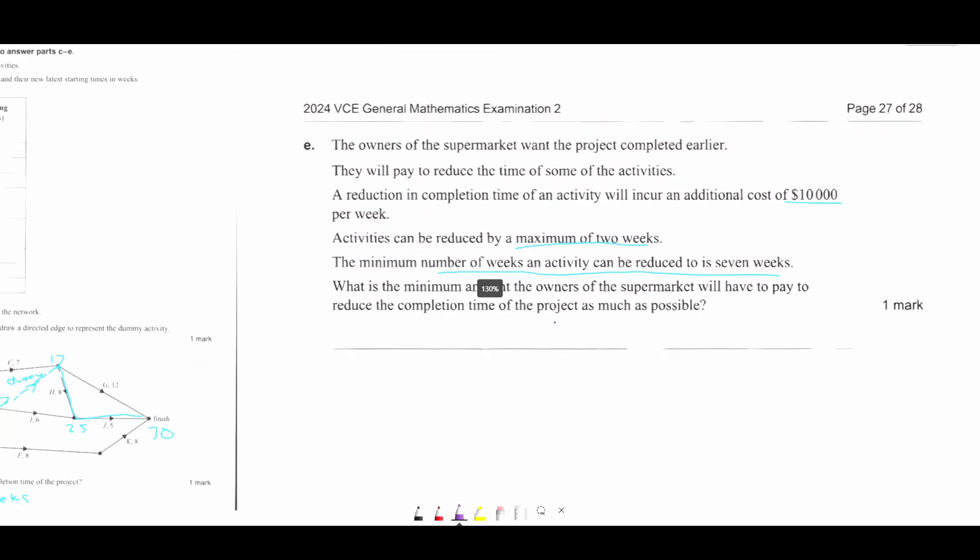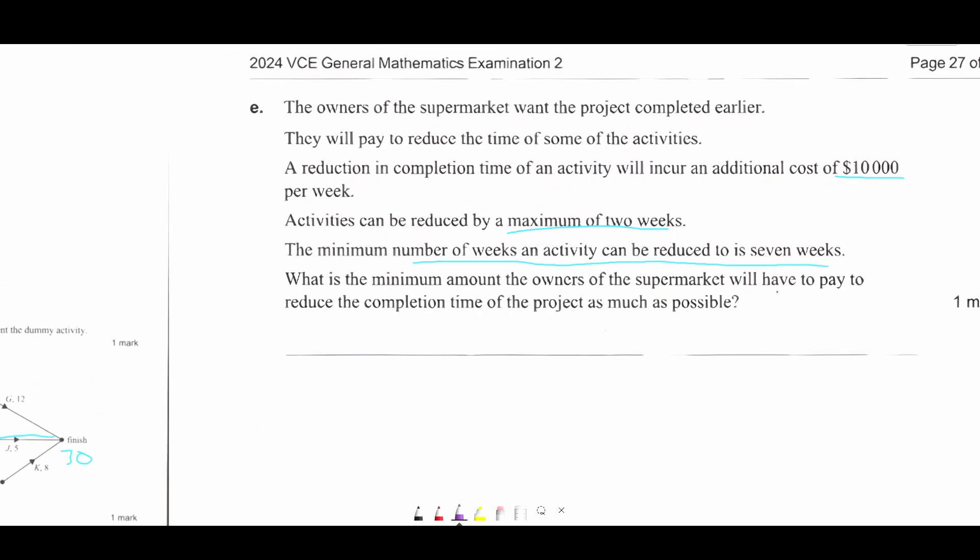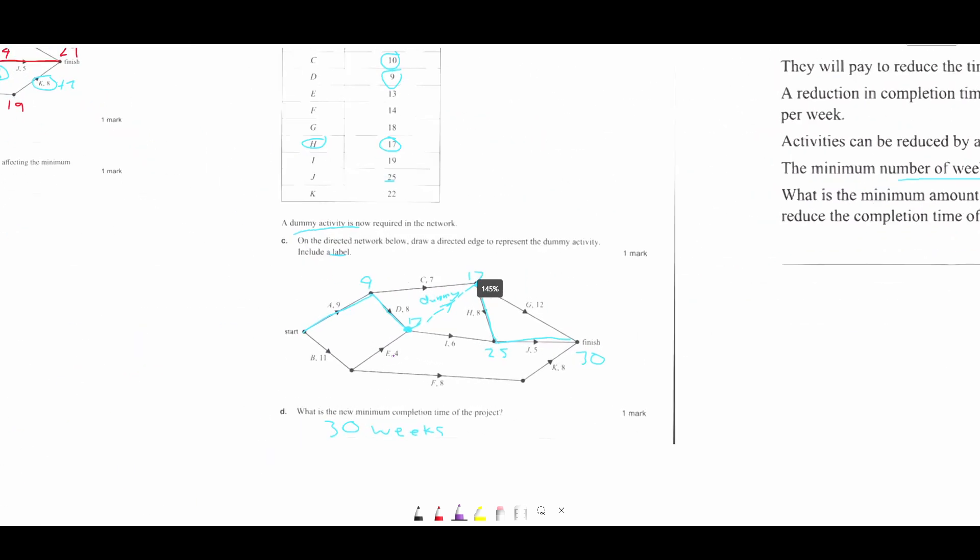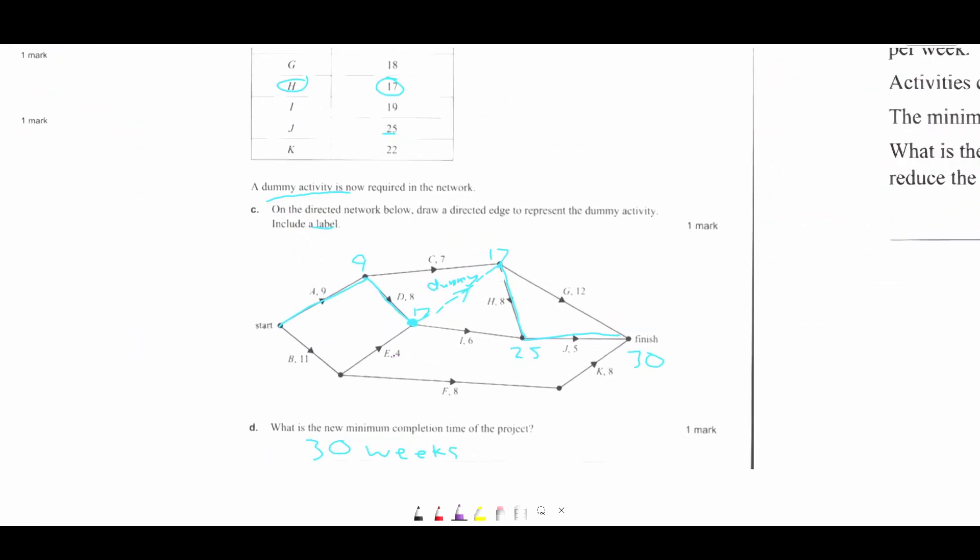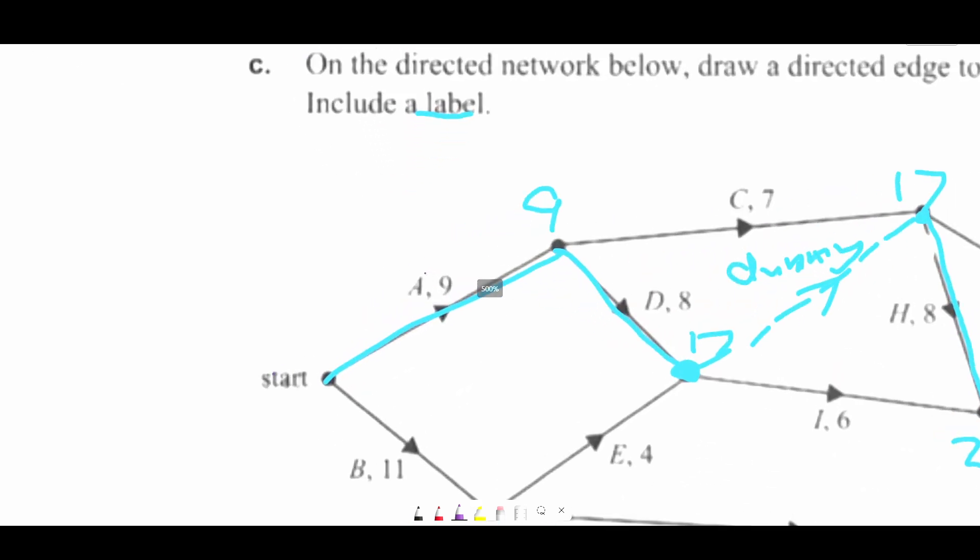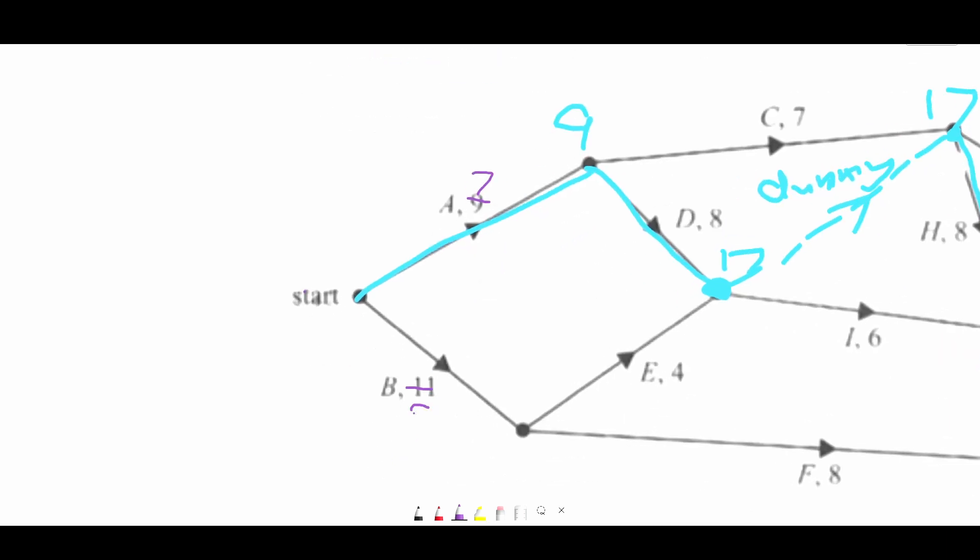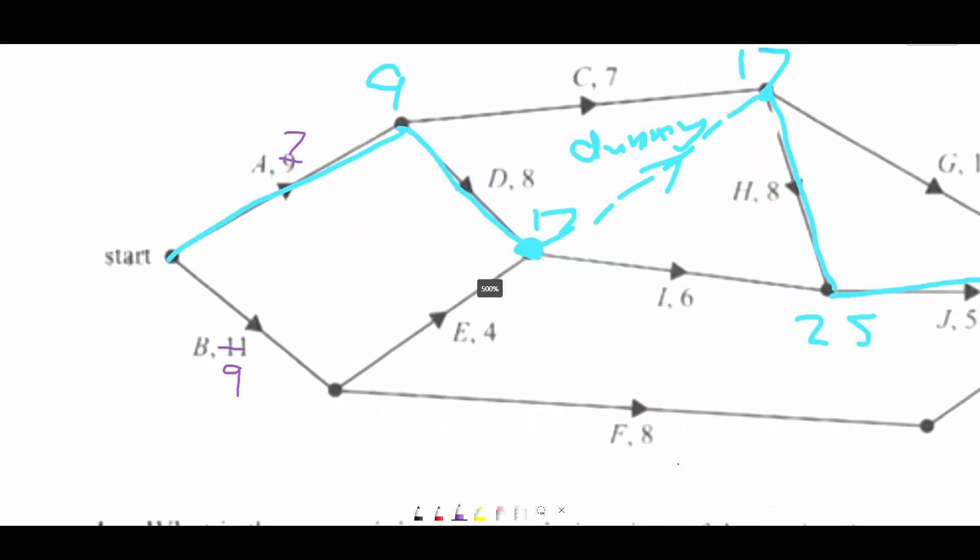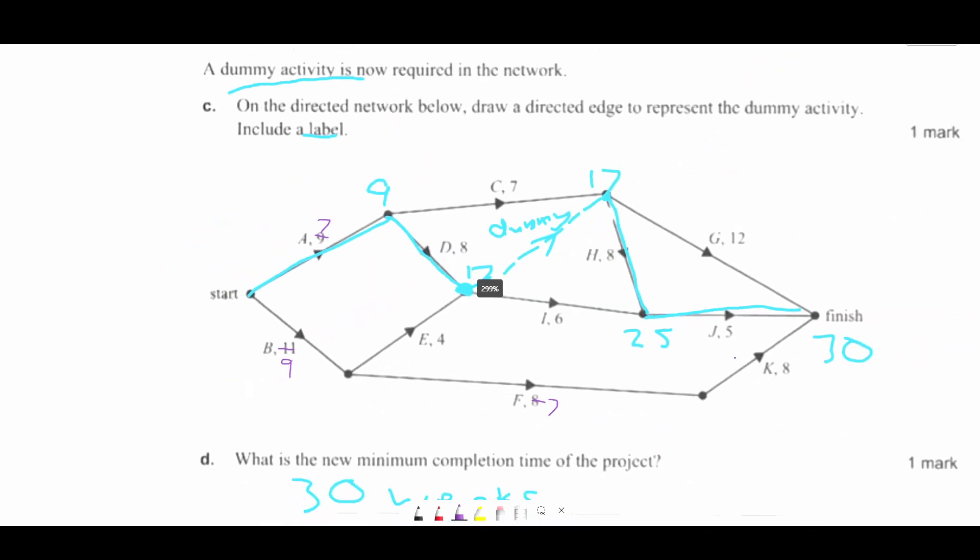So what is the minimum amount to reduce the completion time as much as possible? So what I would do here is just reduce everything to the maximum capacity and just see what the new completion time is. So everything that's above seven, we have to reduce it, reduce it twice. So this is now seven. And this one, we can only reduce it twice to nine. This one has to stay the same. This one becomes seven now. Seven.